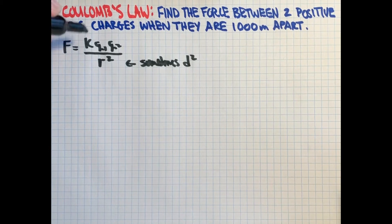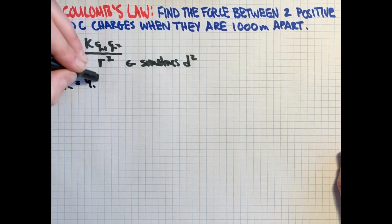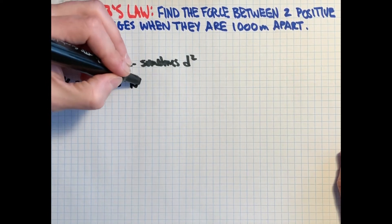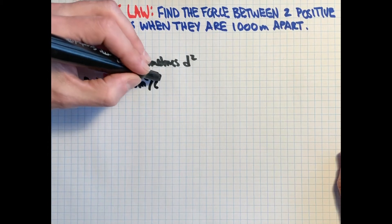So just to clarify, K is Coulomb's constant, sometimes called the electrostatic constant. It has a few names, and we will use 9 times 10 to the 9 Newton meters squared per Coulomb squared.